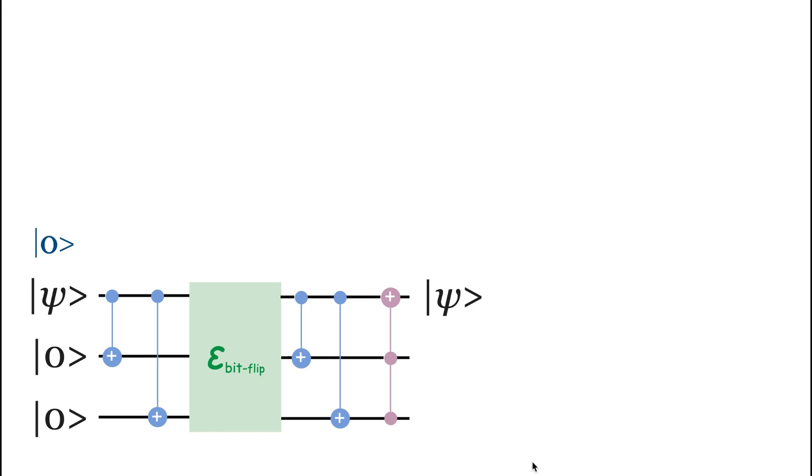There are two CNOT gates connected to the target state and the control state. The first two qubits will be encoded with one CNOT gate. And the third qubit will then also be encoded, so the three qubits will be encoded into a greater number of qubits with two CNOT gates.